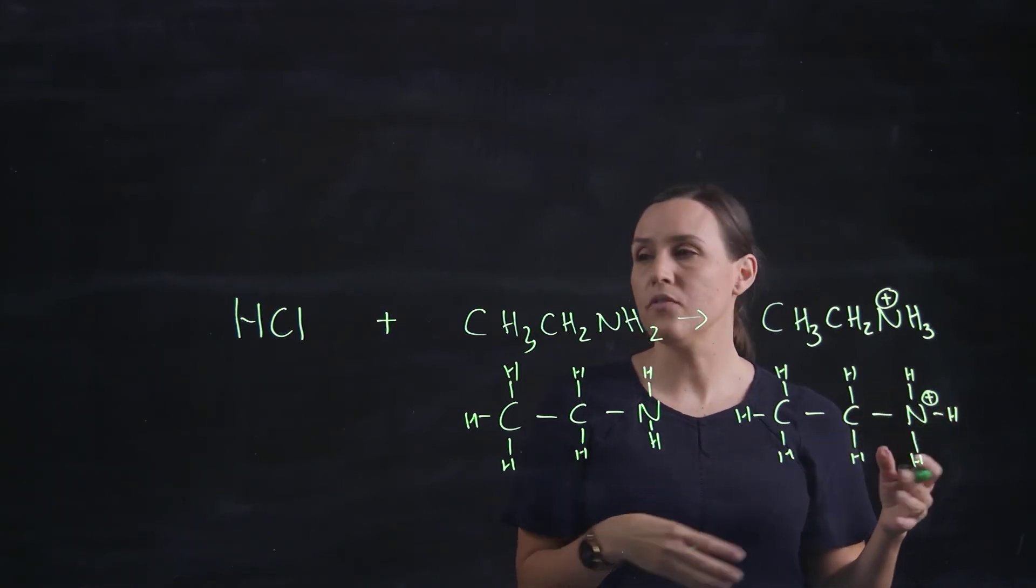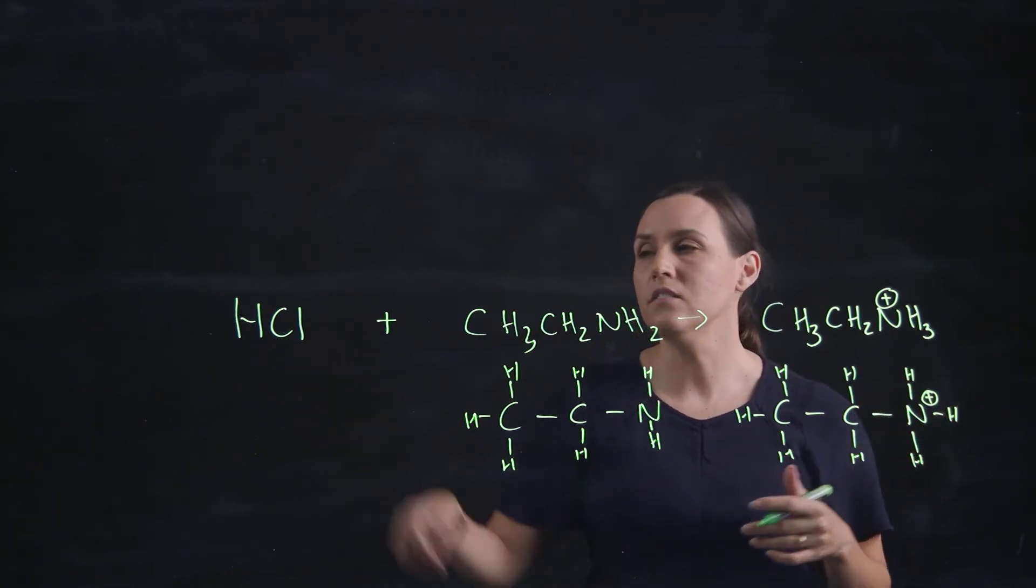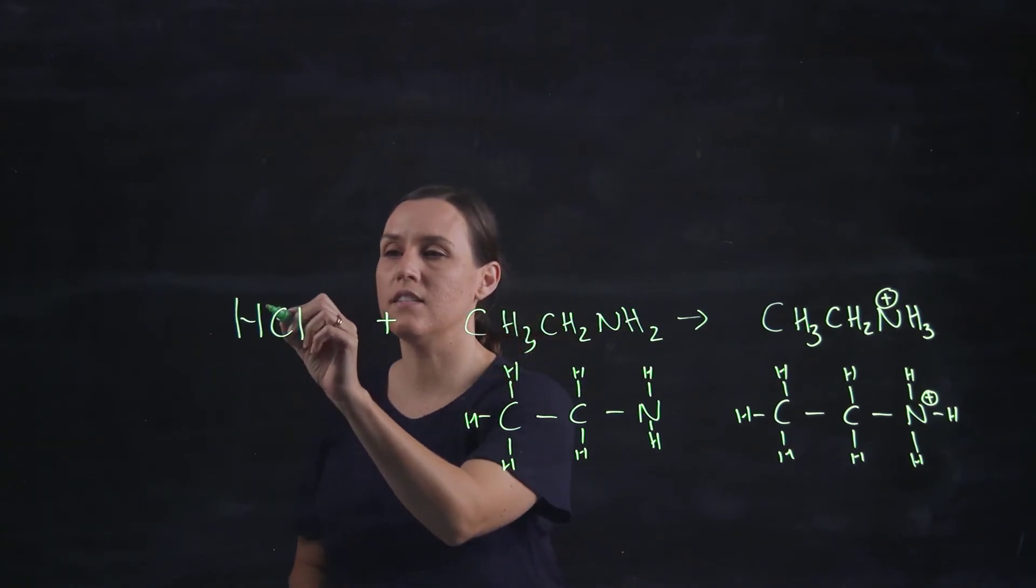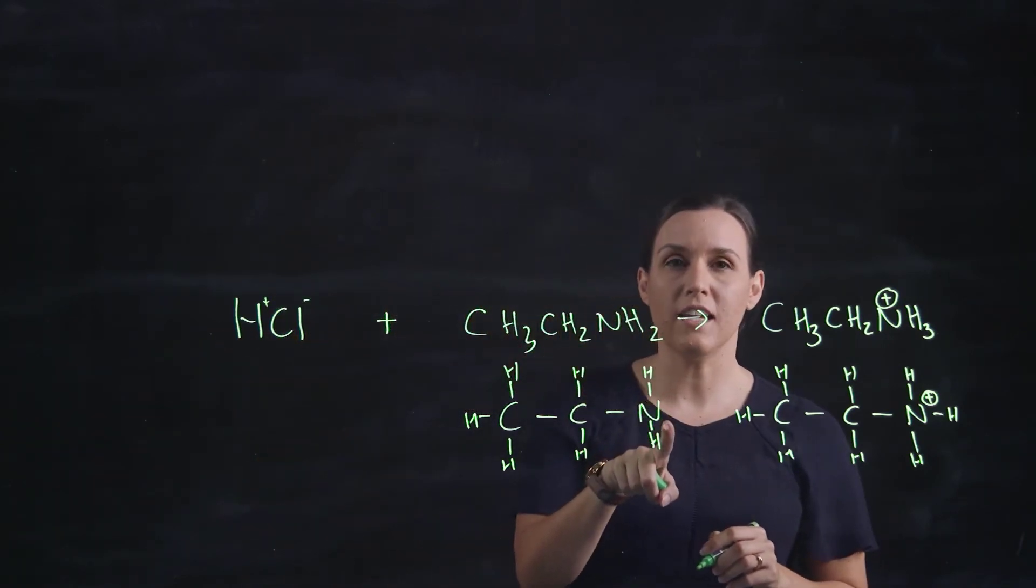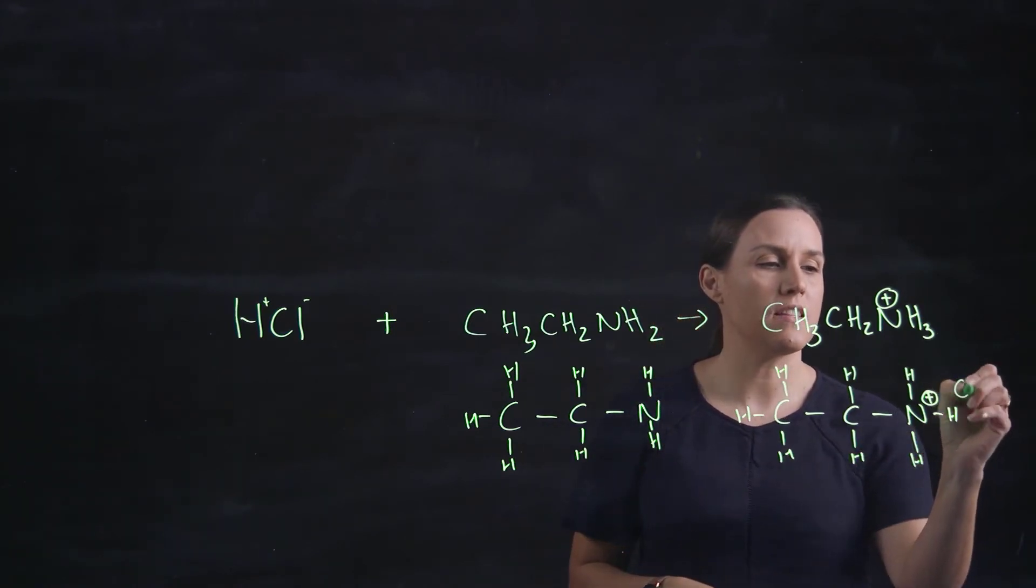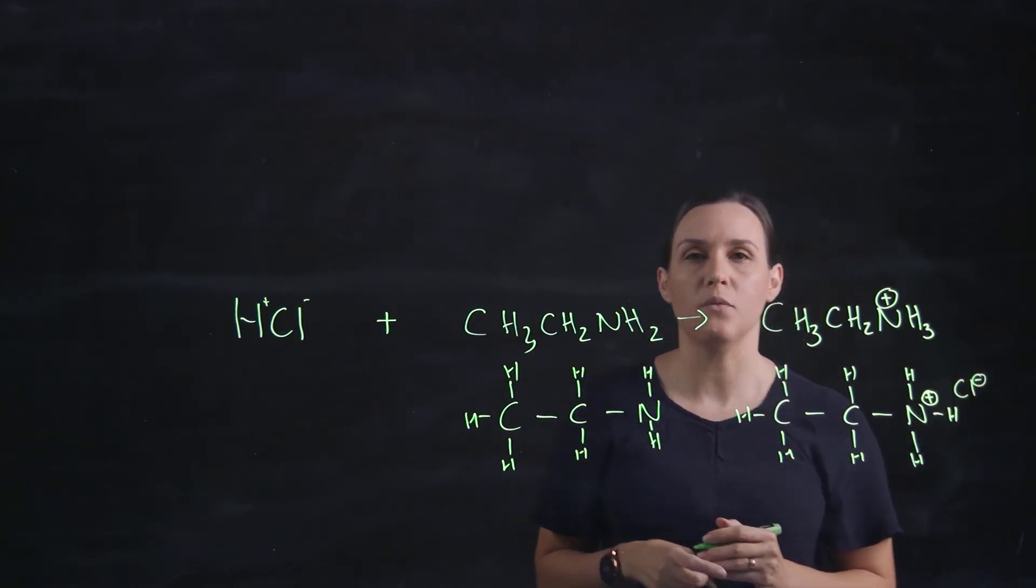Now because it's got a positive, with this HCl we have the H plus and the Cl minus that makes that up. So we've added the H to the nitrogen to pick up that plus and the Cl minus will coordinate with it.